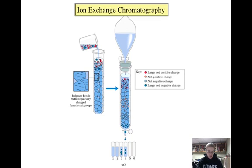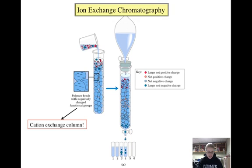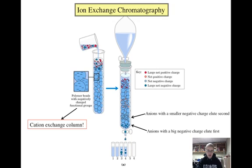Here is an example of an ion exchange column. In this case, because the resin beads are negatively charged, they will hold onto cations, making this a cation exchange column. The mixture of amino acids is poured onto the column, and they will move through at rates determined by their net charges at the pH being used. Because the beads are negatively charged, they will repel the amino acids with the strongest negative charge and will hold onto the amino acids with the strongest positive charge. Therefore, anions with a large negative charge will elute first, followed by anions with a smaller negative charge, followed by cations with a smaller positive charge, followed by cations with a large positive charge.